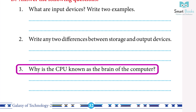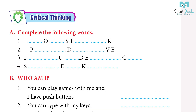Question 3: why is the CPU known as the brain of the computer? Answer: because it controls the functioning of all the other parts of the computer.